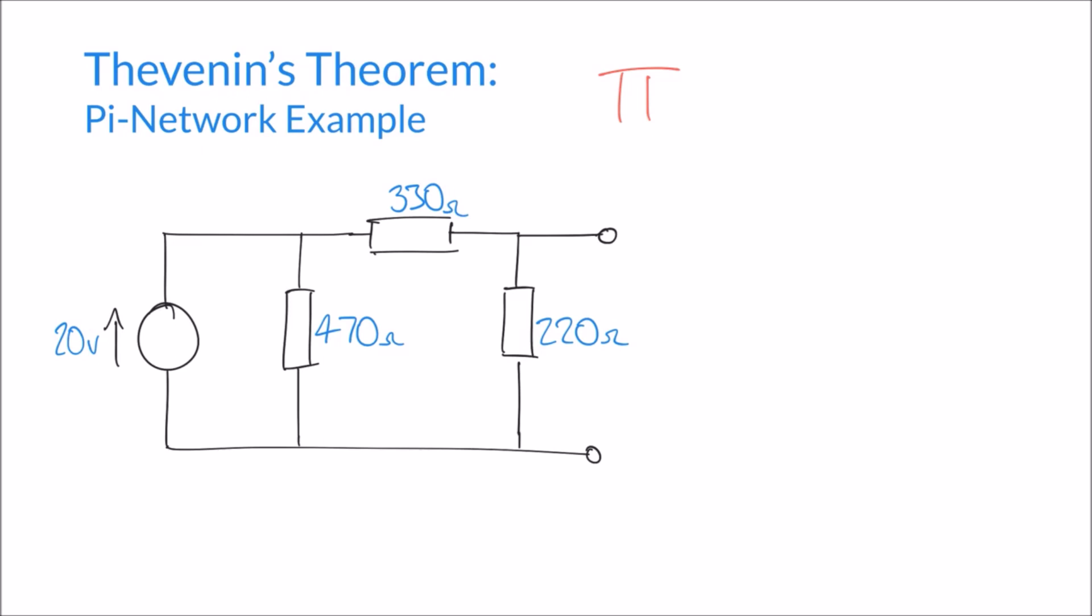So we've got these three resistors arranged like so. And we're going to do what we've done previously and determine the Thevenin equivalent circuit of this particular example. The intention here is to simplify this circuit down to just one Thevenin resistance and one Thevenin voltage.